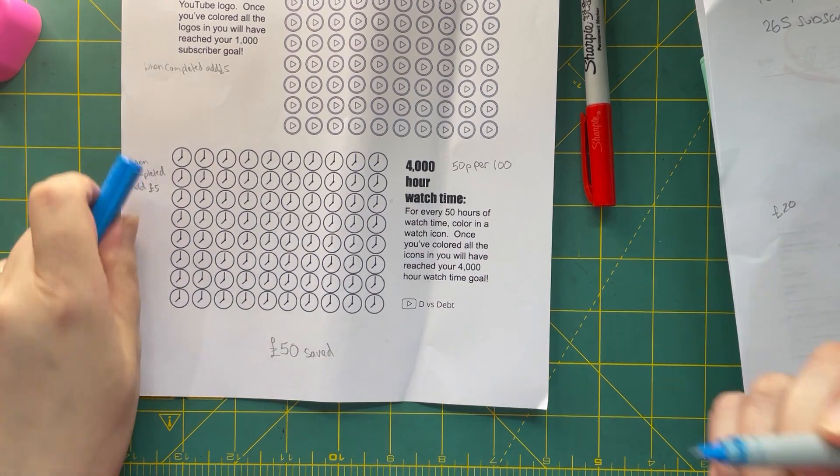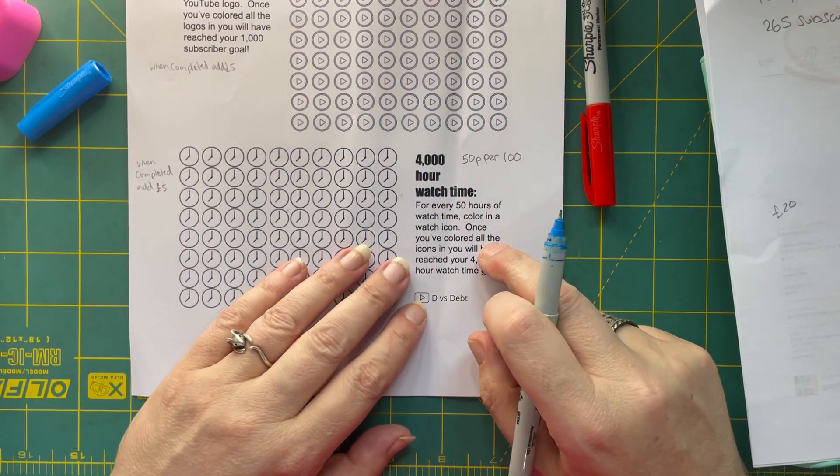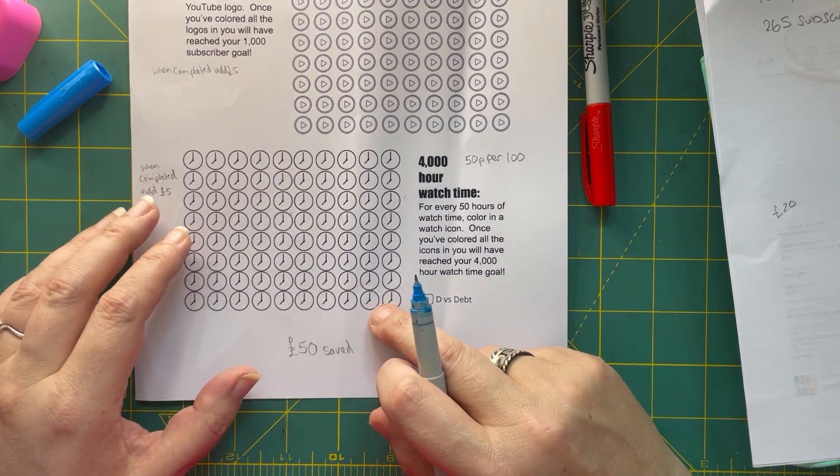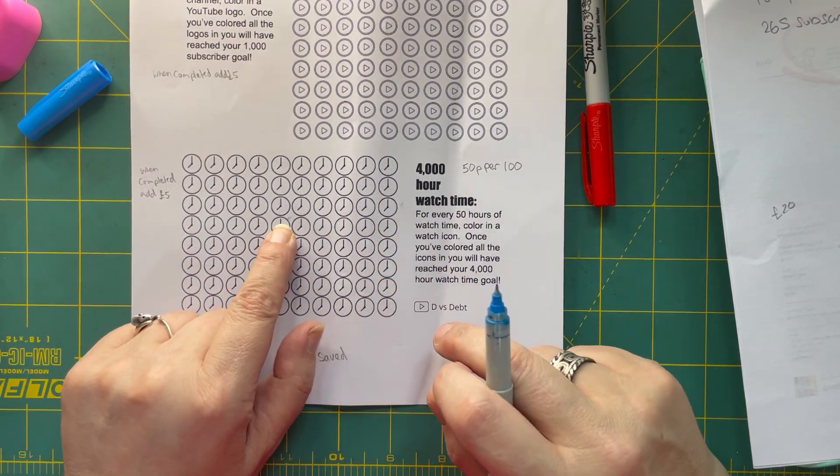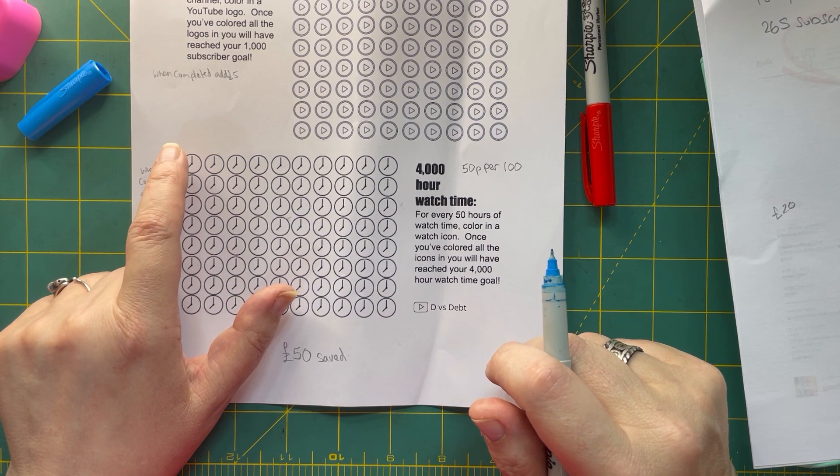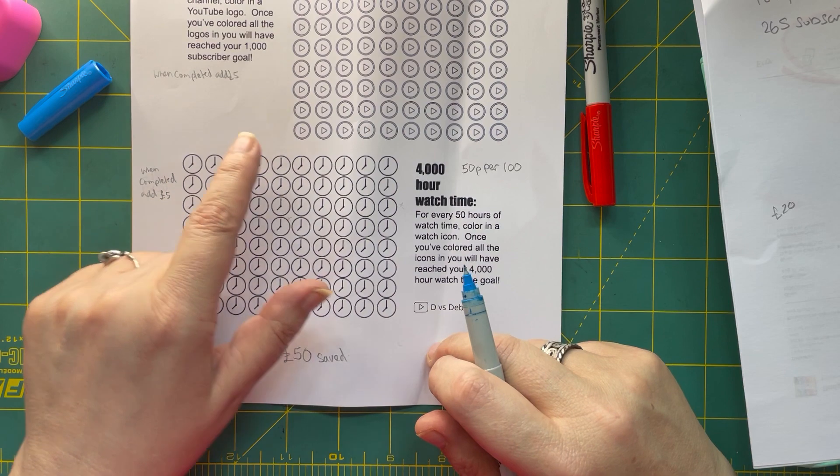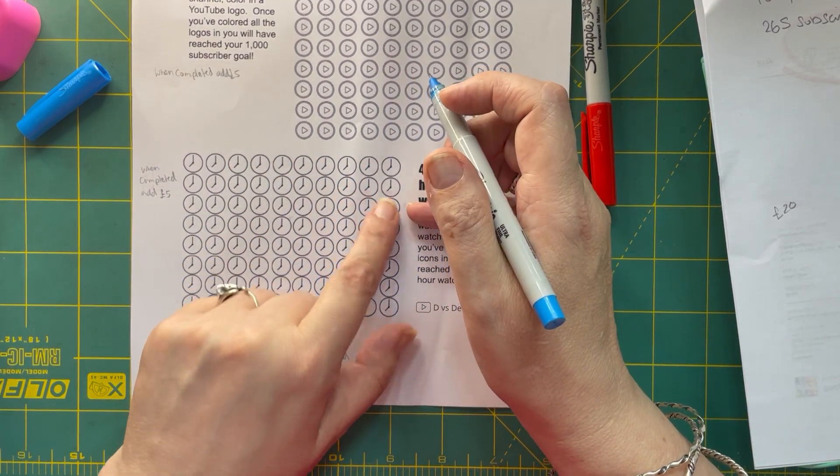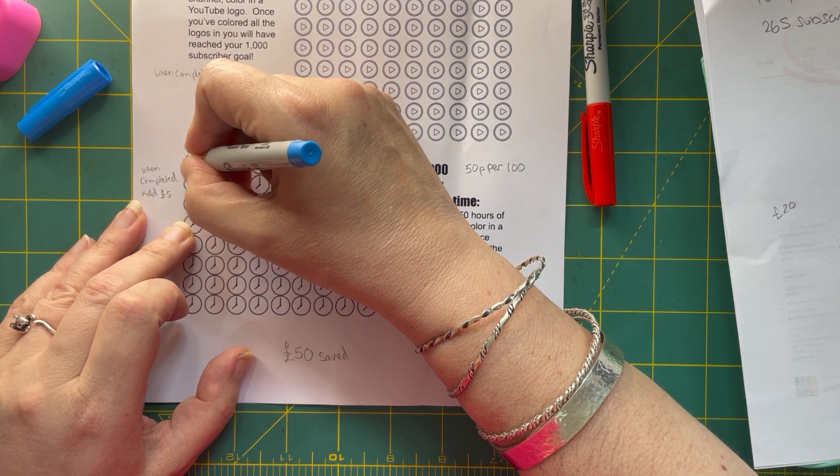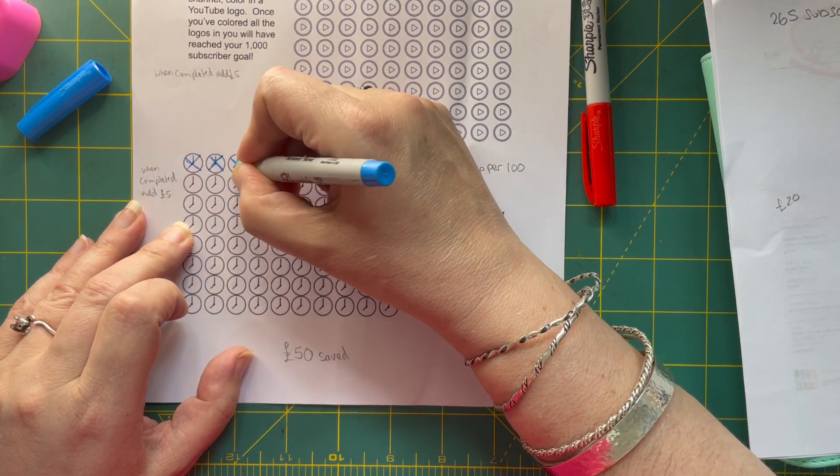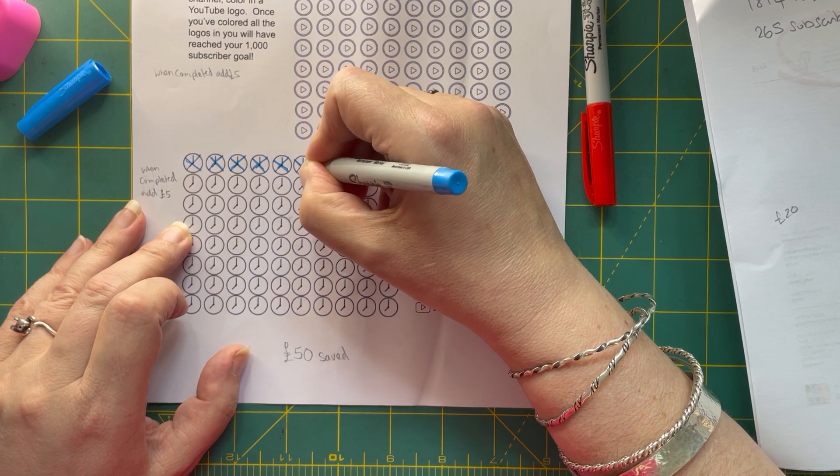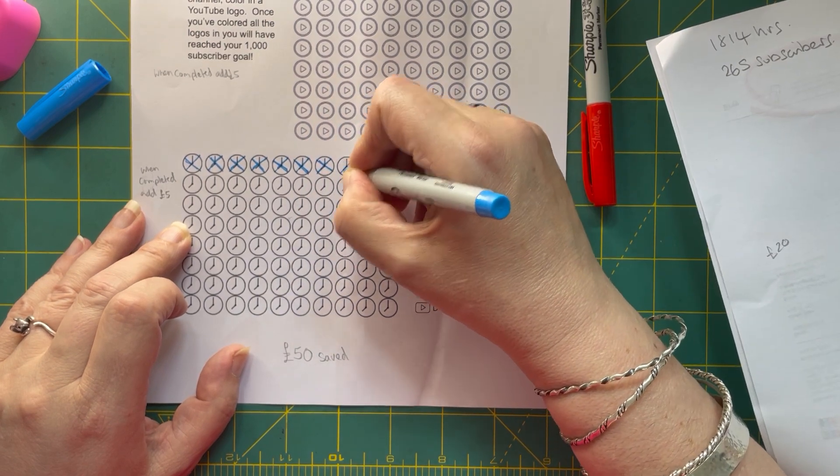Right so that's that one and let's get a different color pen. I love a bright blue. Right so my watch hours I've got 1,814 hours so that's amazing and I thank you all very much for that. So now I've got to work out where I get to. So if these are 50 hours, that's 100, 200, 300, 400, 500, so I'm definitely going to need three of those. I think I'm going to do a cross.